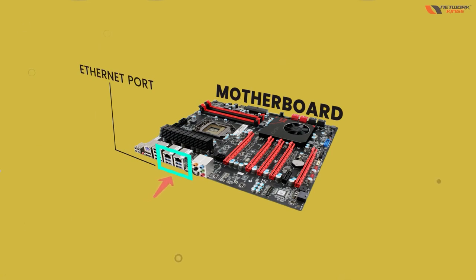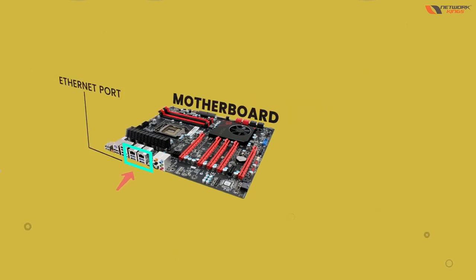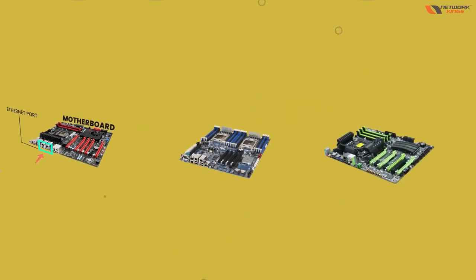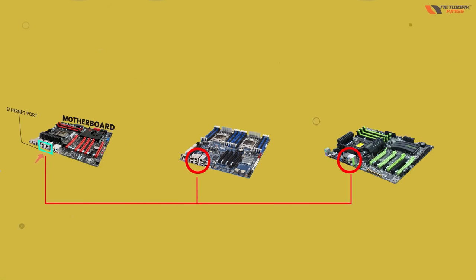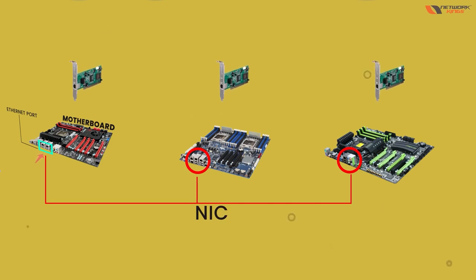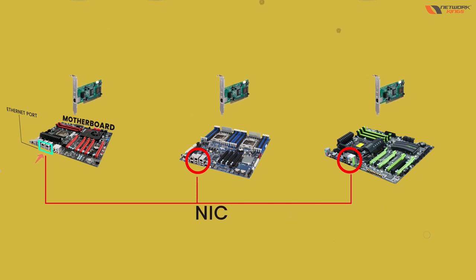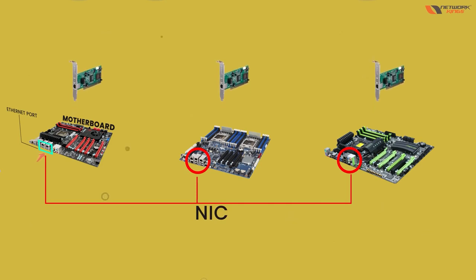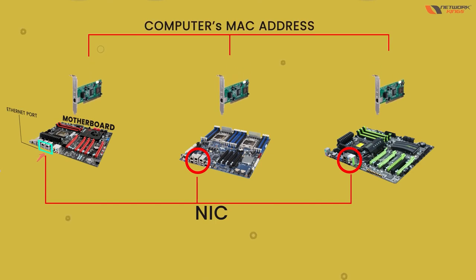This port is what we call the internet port. Nowadays we have two or three cards — it depends on your motherboard. You have findable ports also. These are called NIC cards, or NIC chips.